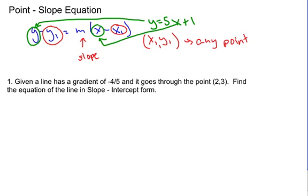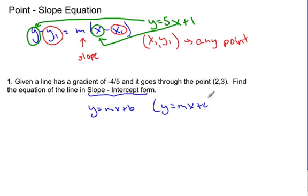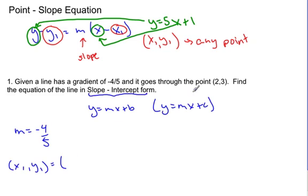So let's give this a try. We're going to use the point-slope equation. Given a line that has a gradient of negative 4/5 and it goes through the point (2, 3), find the equation of the line in slope-intercept form. Slope-intercept form is y equals mx plus b — or if you're in different countries, y equals mx plus c. So I need two things: I need a slope, which is negative 4/5, and I need a point (x₁, y₁), which is (2, 3).